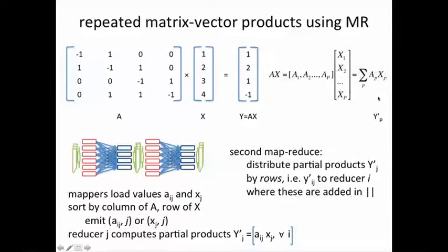The partial products are exactly what reducer p computes. So processor p computes this partial product, and in the first phase of MapReduce, in the second phase, they all get added up. Study this carefully because it's kind of important to understand how matrix-vector multiplications are done using MapReduce. This is just one way; there are other more efficient ways of doing matrix-vector products using MapReduce.